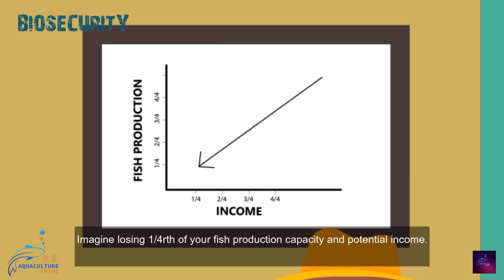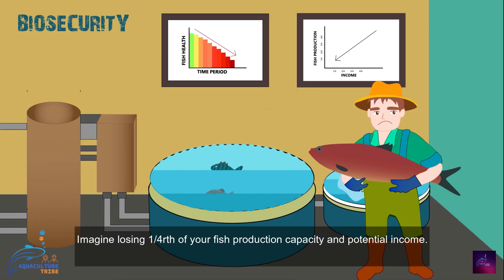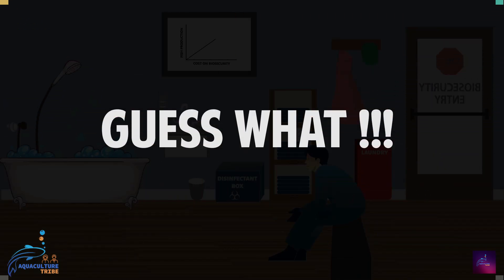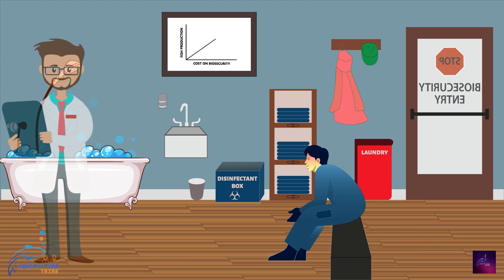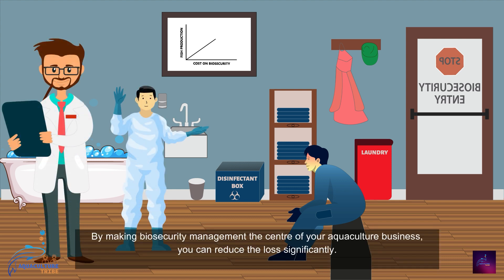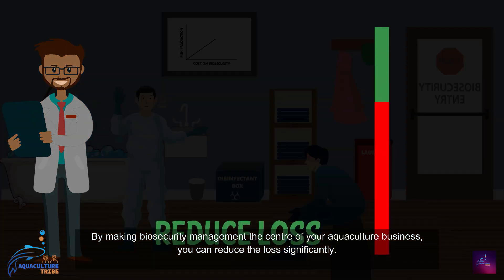Imagine losing one-fourth of your fish production capacity and potential income. Guess what — much of this damage can be controlled with good farm management practices. By making biosecurity management the center of your aquaculture business, you can reduce the loss significantly.